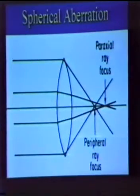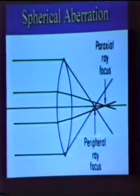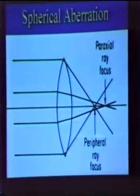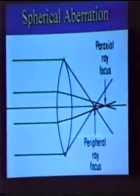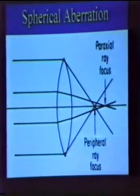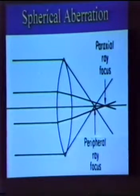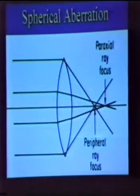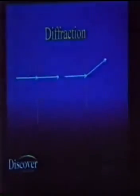With spherical aberration, as we go further out in the lateral extent of a converging lens, we're going to get more converging or refracting power, so we have a blurred image inherent to the system. Our human cornea does minimize this somewhat by making the peripheral cornea somewhat flatter to bring the image out to a more peripheral location.